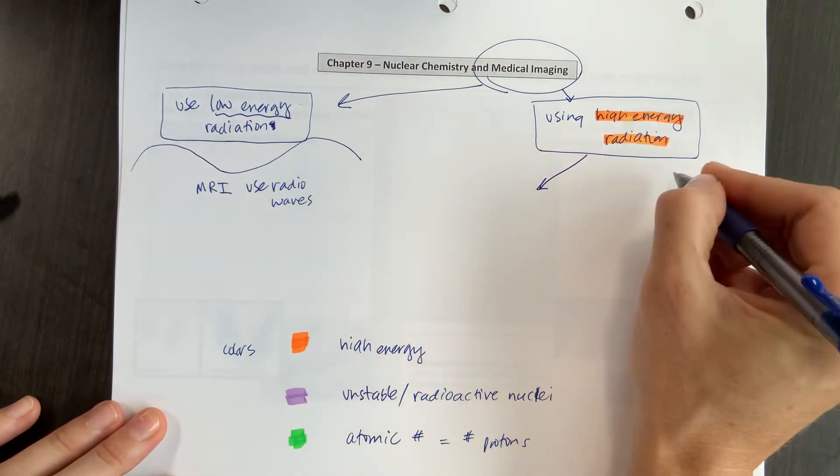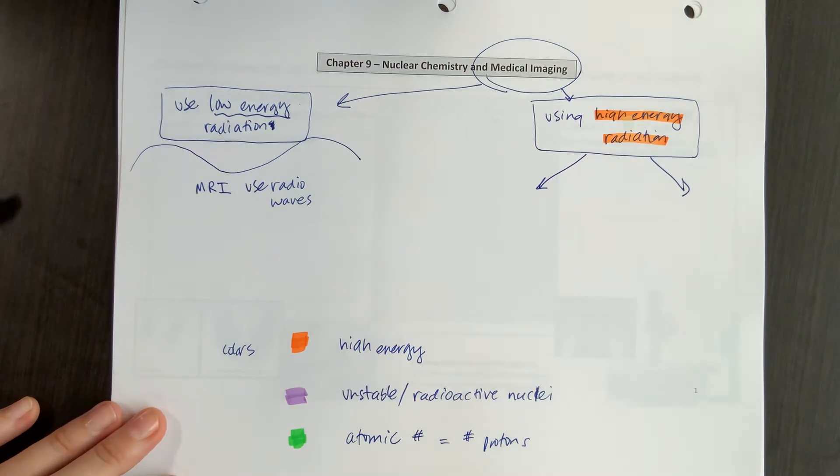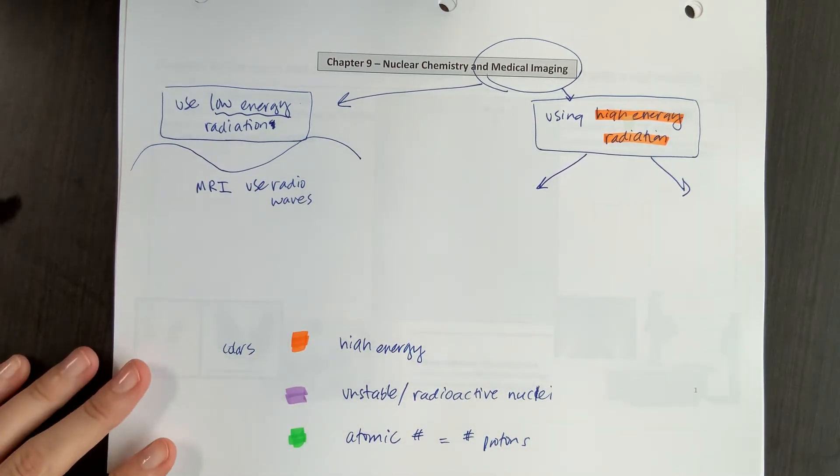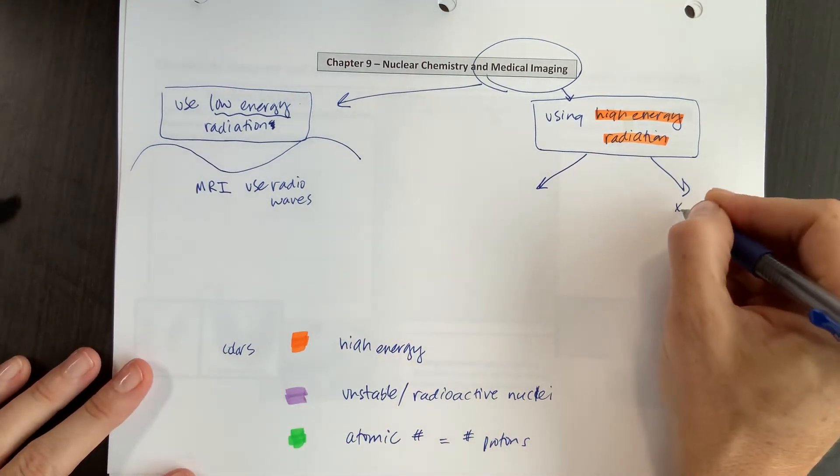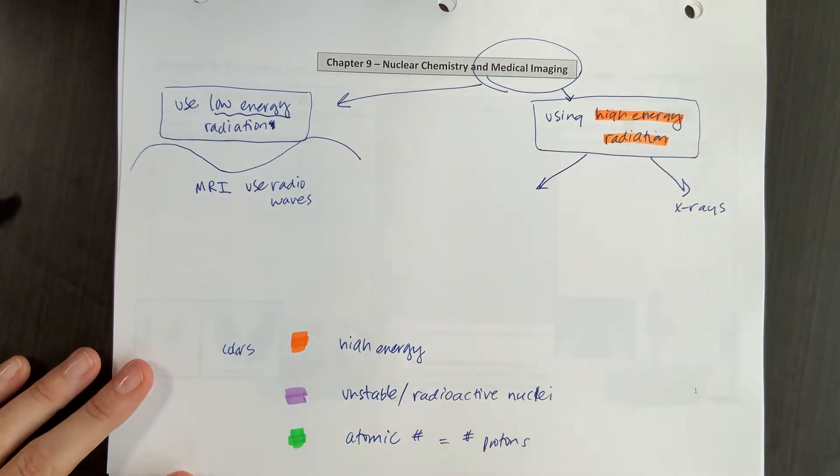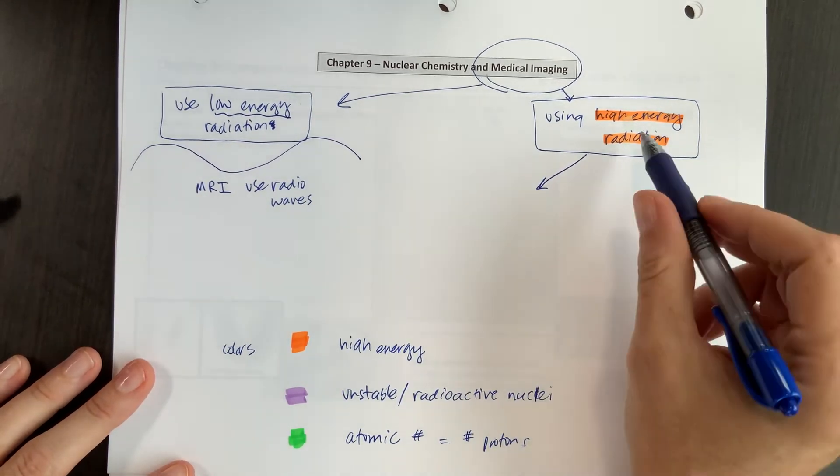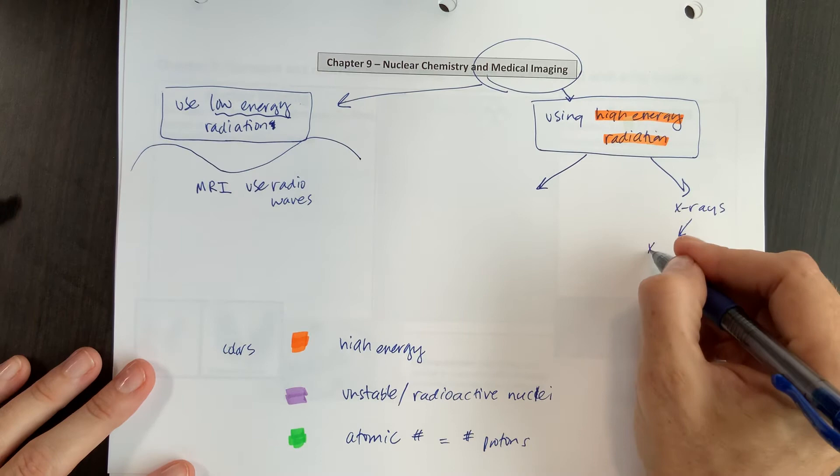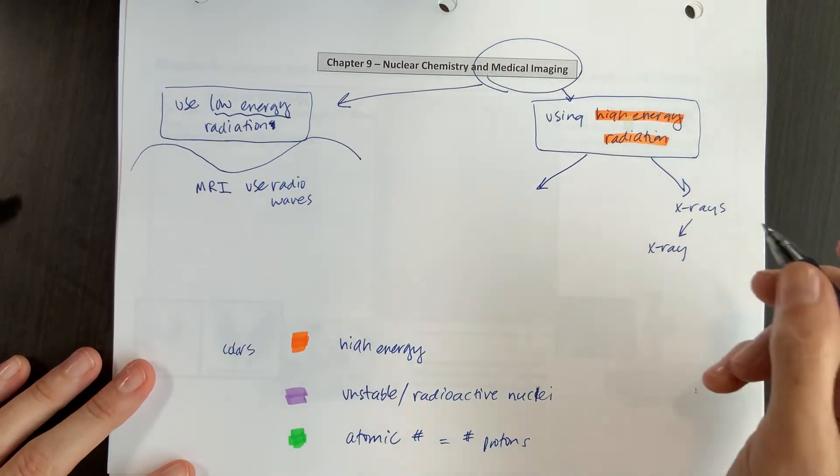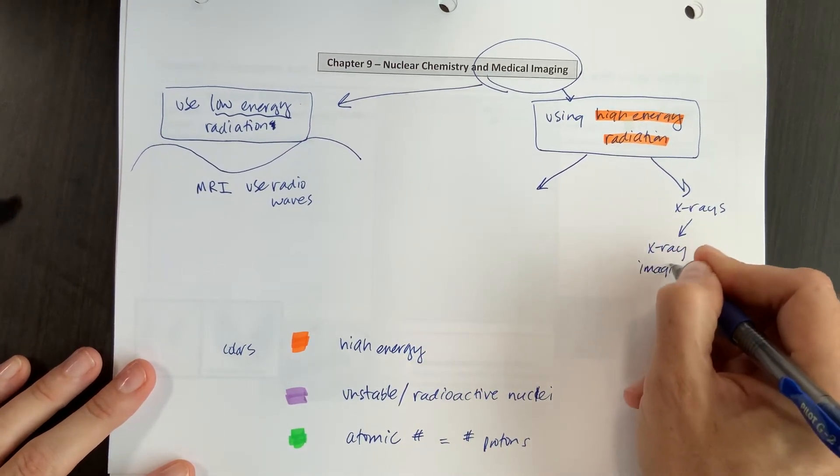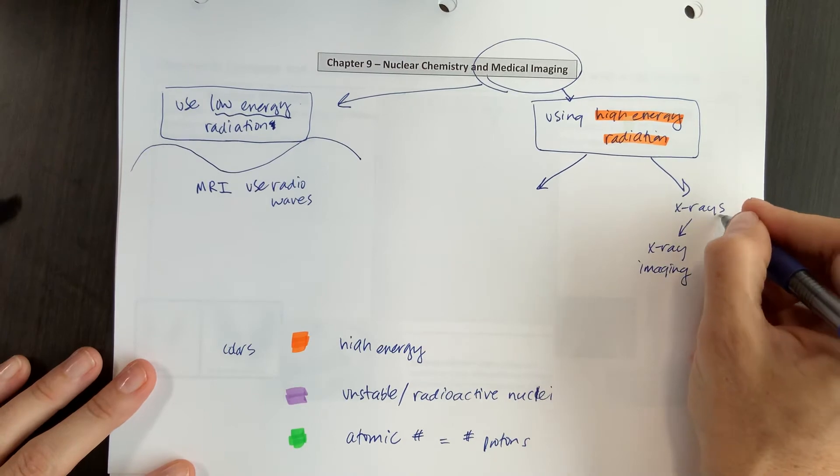And within that, we're going to see two different groups of imaging procedures. So one will be x-rays. And x-rays are high energy, a form of high energy radiation that are used both for x-ray imaging, a quick look at like a broken bone or something.